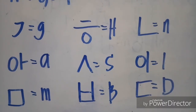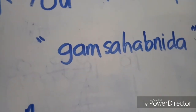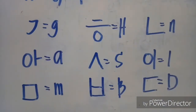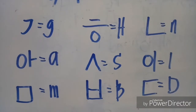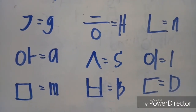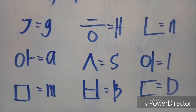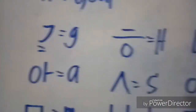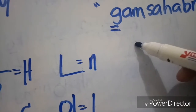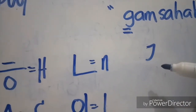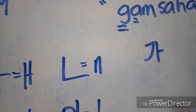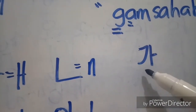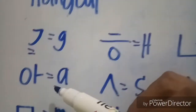They both have a circle. For 'kamsahamnida', this character — the next one is letter T, and then letter A. You have to write it like this. If you notice, there is no circle like on the vowel alone, because this is already a consonant.